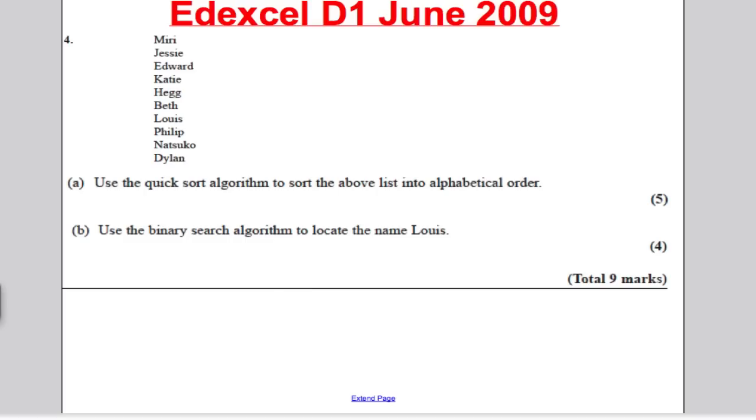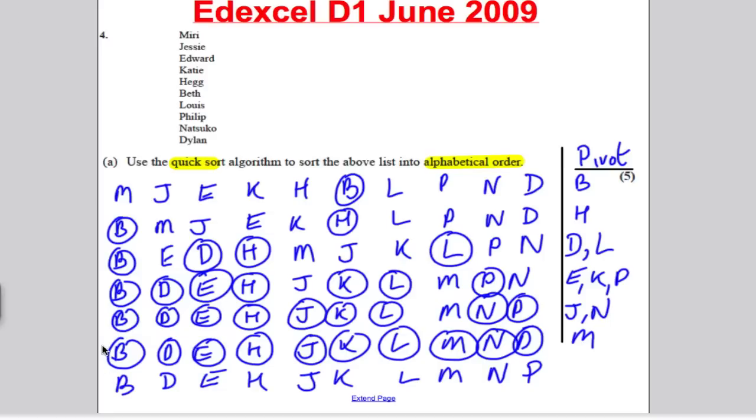Let's take a look at another question. Here's the D1 June 2009. Again, a quick sort question first and then a binary algorithm question next. Pause the video, work through this question and mark your answers against mine.